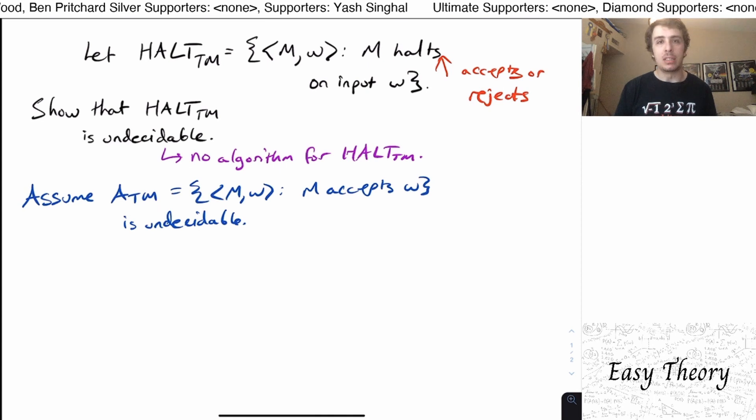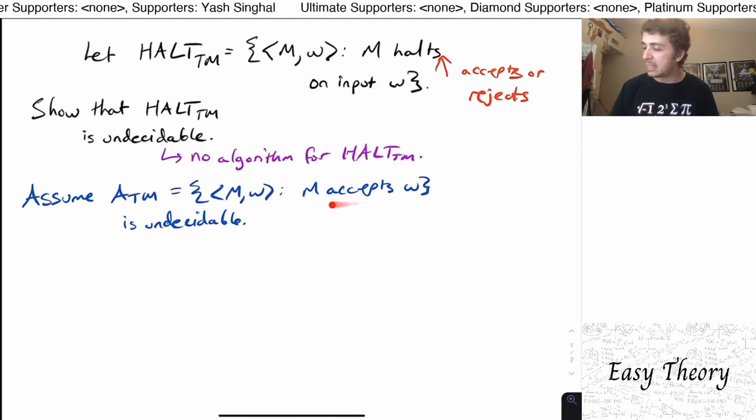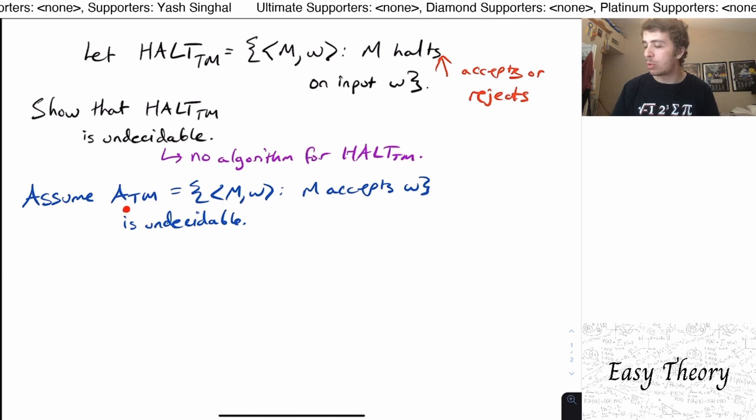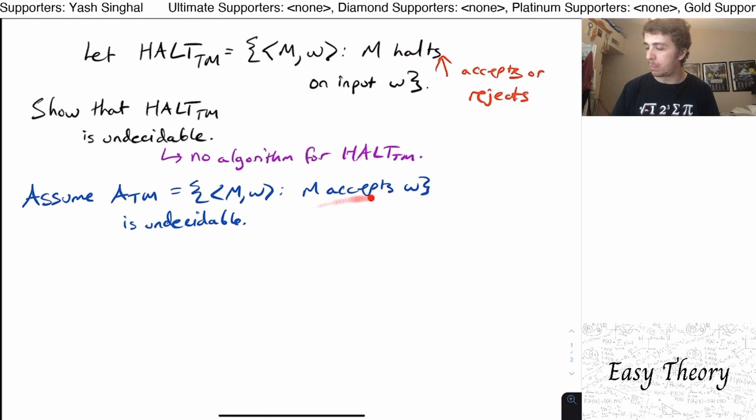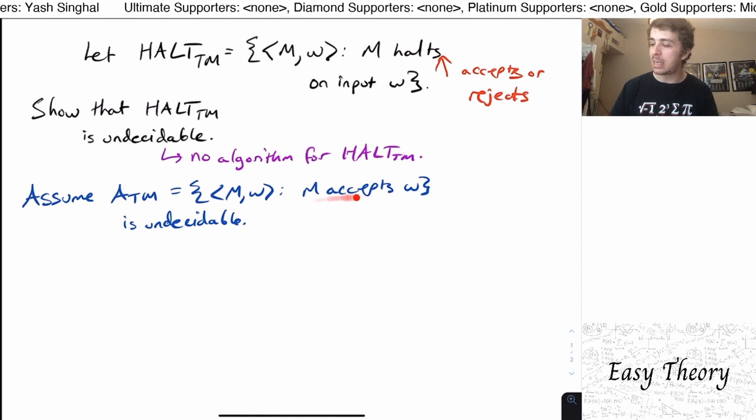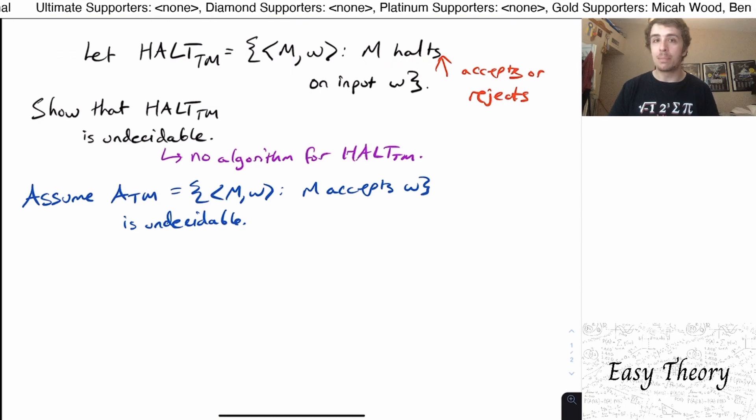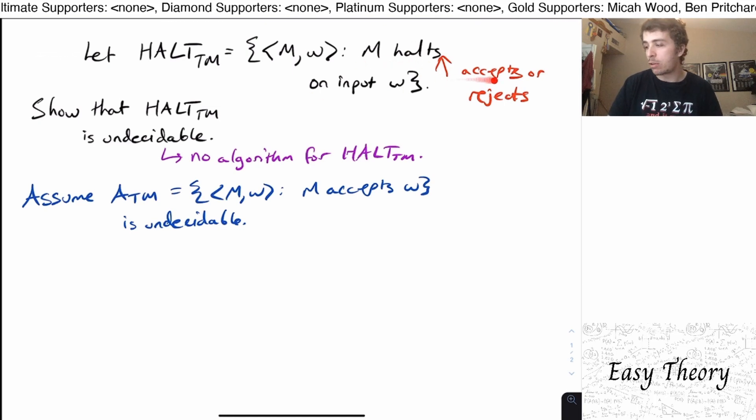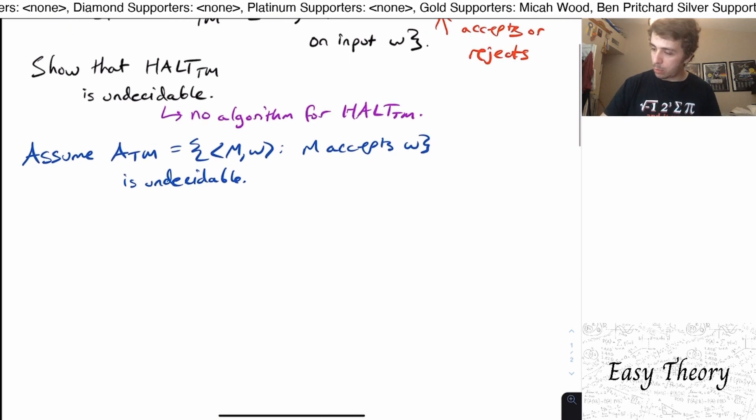And why do we want to use this language? Well, we got to use some undecidable problem first. And this one is a reasonable candidate to pick because the condition on whether MW is in this language or this one is very similar between the two. This one is it accepts W. And this one is either halts an input W, either it accepts or rejects W.